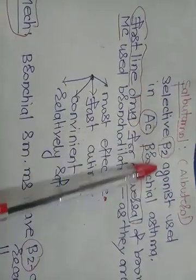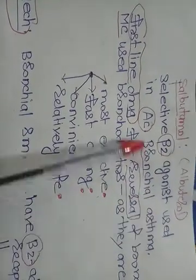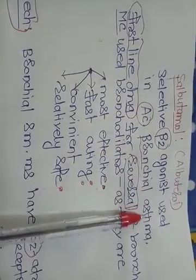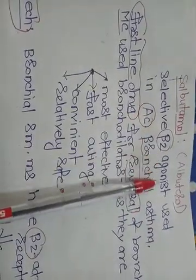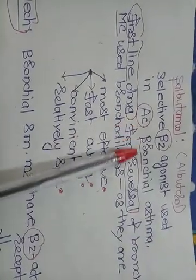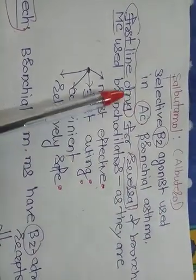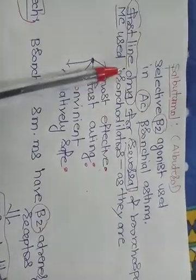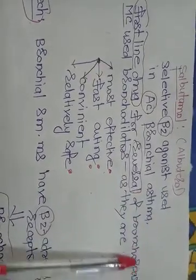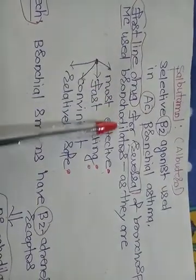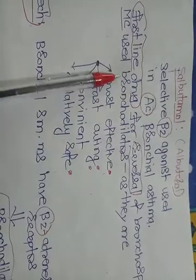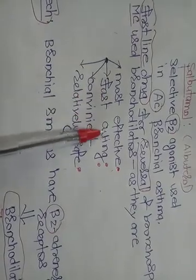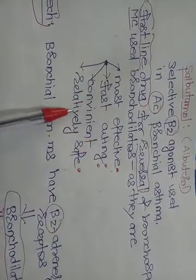Salbutamol is a selective beta-2 agonist used in acute bronchial asthma or status asthmaticus. It is a first-line drug for the reversal of bronchospasm. It is the most commonly used bronchodilator because it is most effective, onset of action is very fast, convenient, and relatively safe.